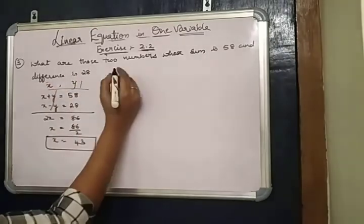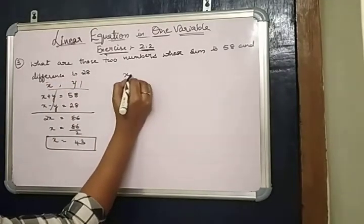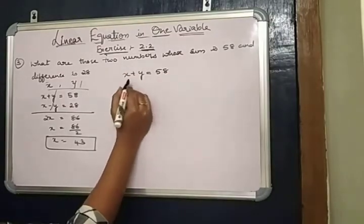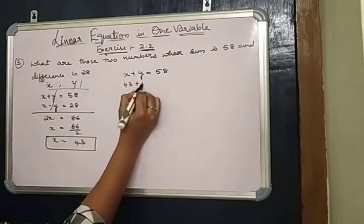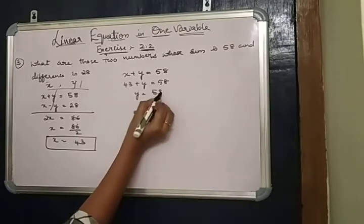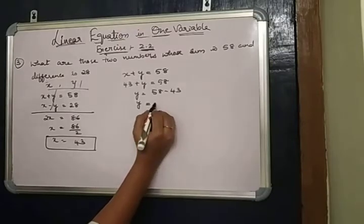Substitute this X value in the place of X plus Y equals 58. By that we get the Y value. In the place of X, we substitute 43 plus Y equals 58, where Y equals 58 minus 43, and Y equals 50.